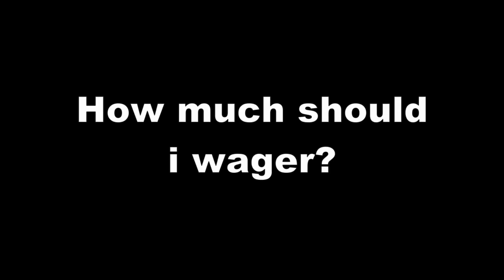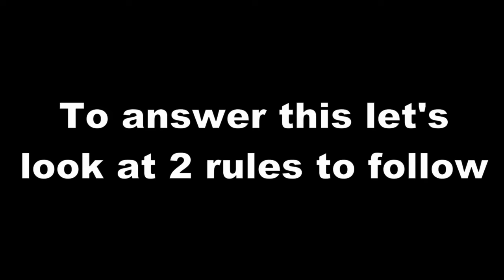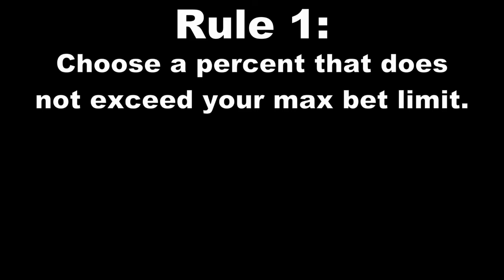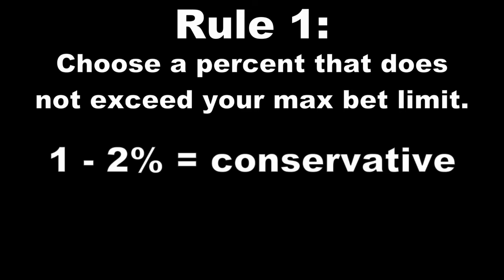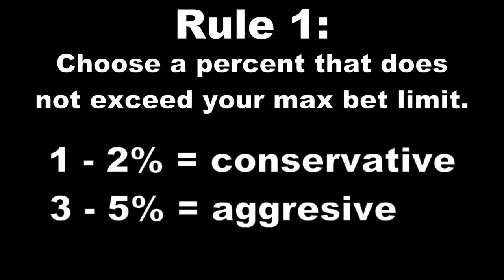Now, there is the question of how much should my unit size be. We have our max bet limit, but that's just there to make sure we don't run out of money. How much should I be wagering on any given bet? In my years of research, I have found two very important rules that should never be broken. Doing so can very quickly tear down several months of work that it took to get there. Rule number one is very easy: choose a percent that does not exceed your max bet limit. This is going to be your unit size. If you want to play it safe, 1-2% is considered conservative, or 3-5% if you want to be aggressive. This percent is entirely up to you. The most important thing to remember is to not exceed your limit.